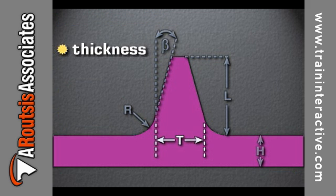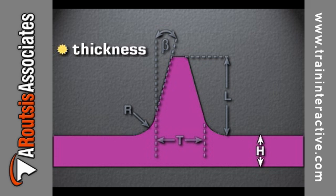The thickness, represented by T, is the thickness of the bottom of the rib. The thickness of the rib should be between 40 and 80 percent of the wall thickness, represented by H.